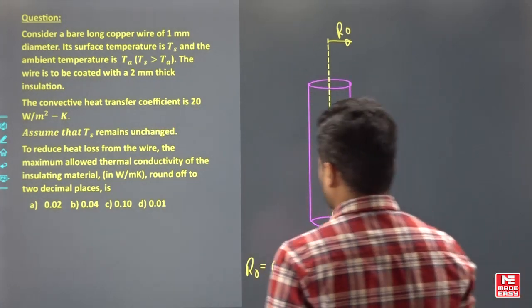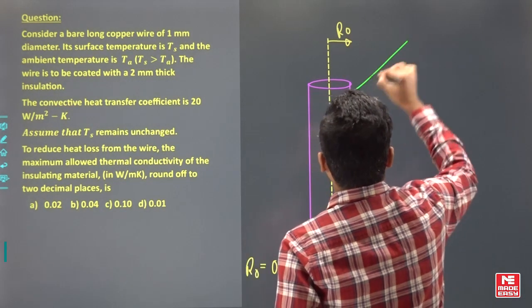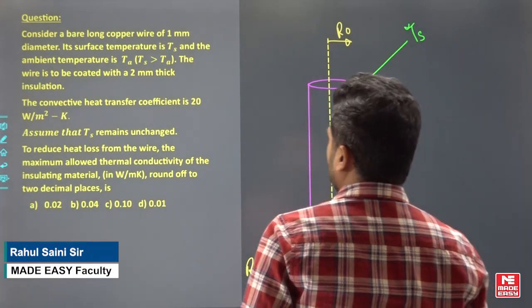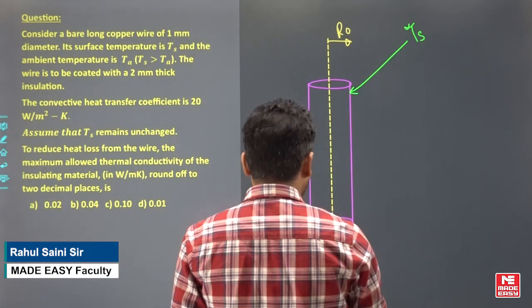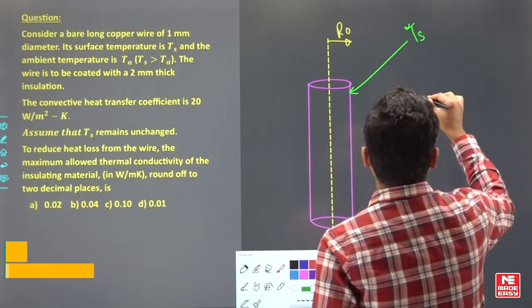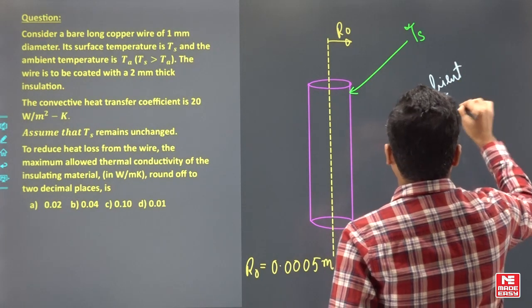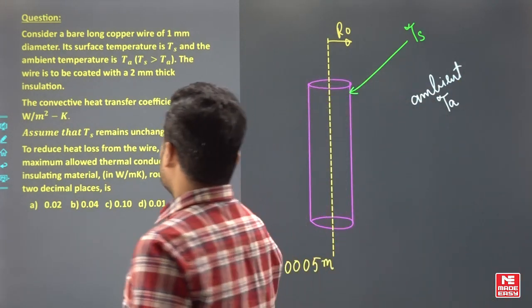Its surface is at temperature T_S. This temperature is given as T_S and the ambient is at temperature T_A. So outside the ambient temperature is T_A. So ambient is at temperature T_A, T_S is greater than T_A.